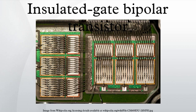The first generation IGBTs of the 1980s and early 1990s were prone to failure through such modes as latch-up and secondary breakdown. Second generation devices were much improved, and the current third generation ones are even better, with speed rivalling MOSFETs and excellent ruggedness and tolerance of overloads. The extremely high pulse ratings of second and third generation devices also make them useful for generating large power pulses in areas including particle and plasma physics, where they are starting to supersede older devices such as thyratrons and triggered spark gaps.